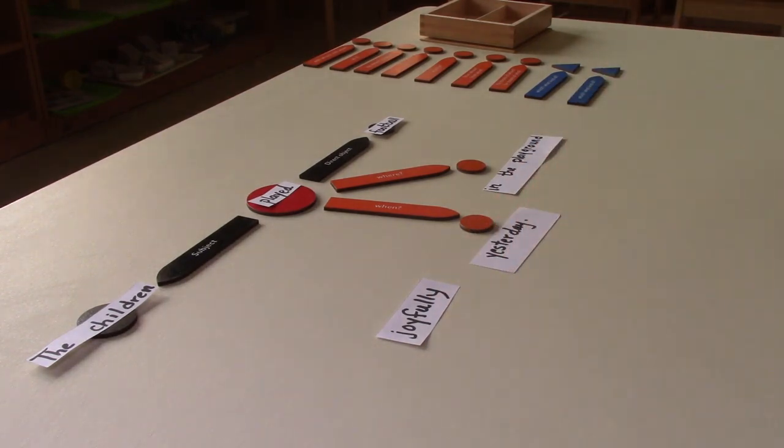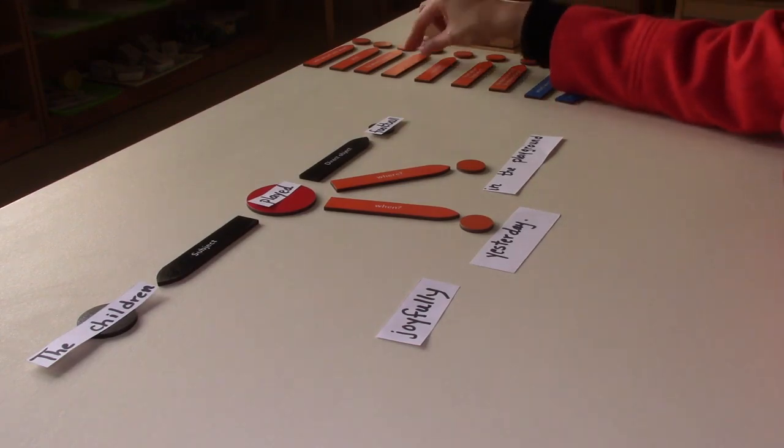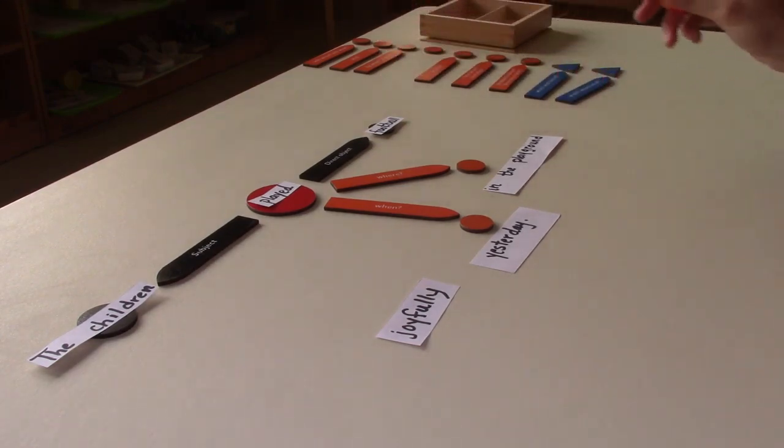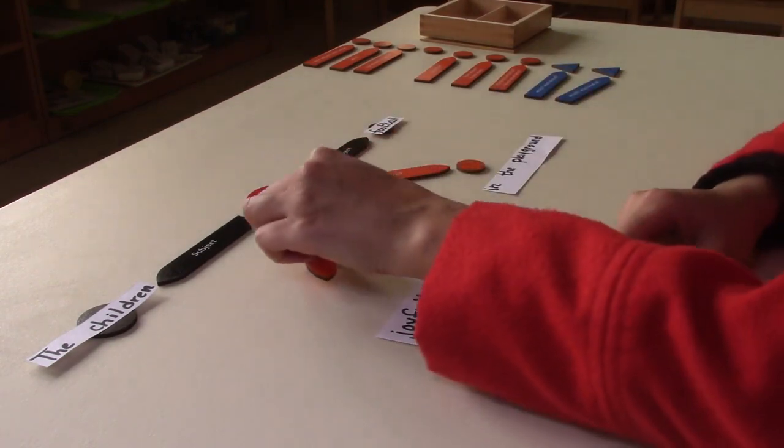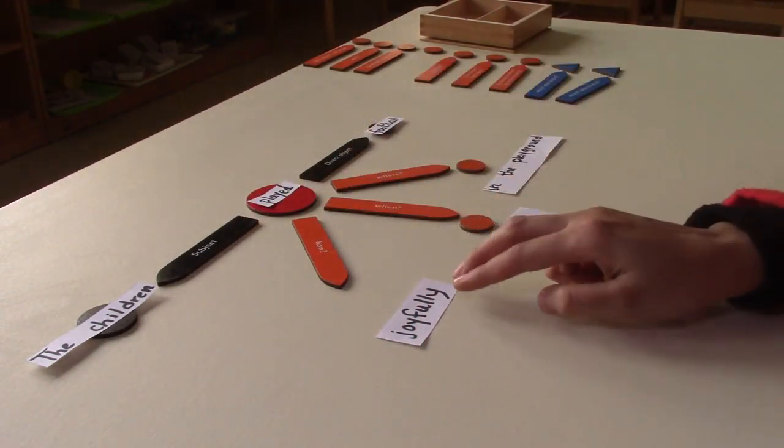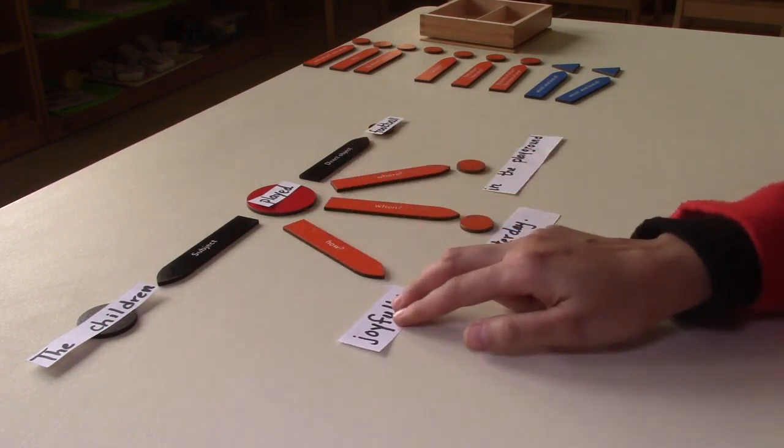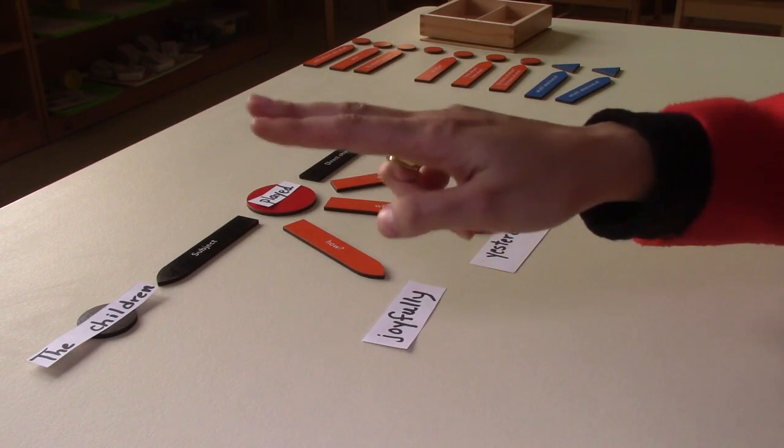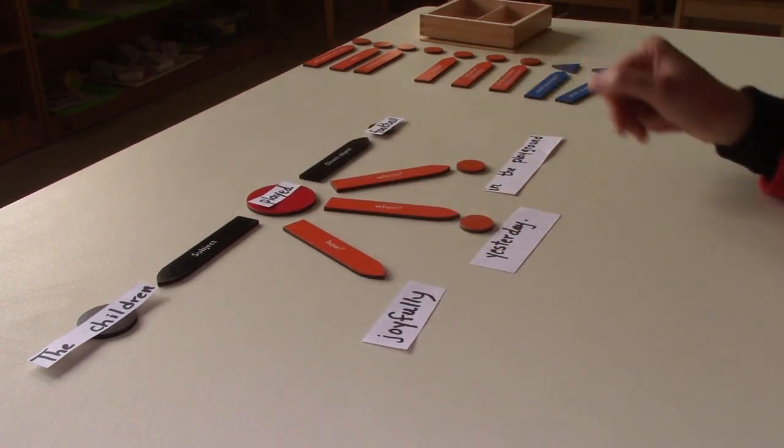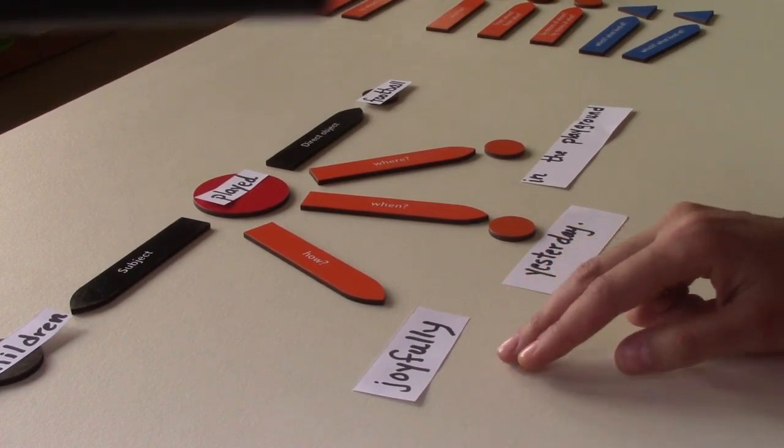Joyfully answers one of the adverbial extensions that we have here. We have a question: How? So you get the arrow and it comes out of the verb and it answers the question, How? The children played football in the playground yesterday joyfully.